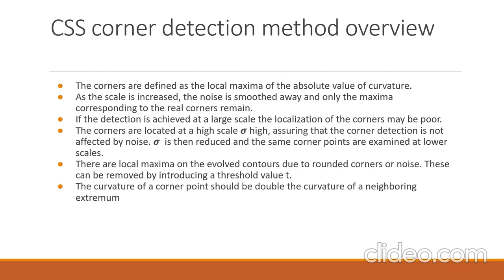In the CSS corner detection method, corners are defined as local maxima of absolute curvature. As scale is increased, the noise is smoothed away and only maxima corresponding to real corners will remain. We increase the value of sigma to remove the effects of noise, but with increasing sigma the localization of corner points becomes poor — the corner point may move slightly with increasing sigma. To tackle this problem, we track down the corner point by reducing sigma and examining the corner points detected at a lower scale to get the exact coordinates. Also, local maxima on evolved contours due to rounded corners or noise will have lesser curvature than real corner points, so we can set a threshold value T to remove these false corners.